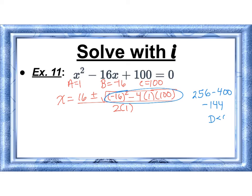Discriminant is negative, which means I'll have two imaginary solutions. Hopefully that makes sense. So now we're going to have equals 16 plus or minus the square root of negative 144 all over 2. So that is 12i all over 2.